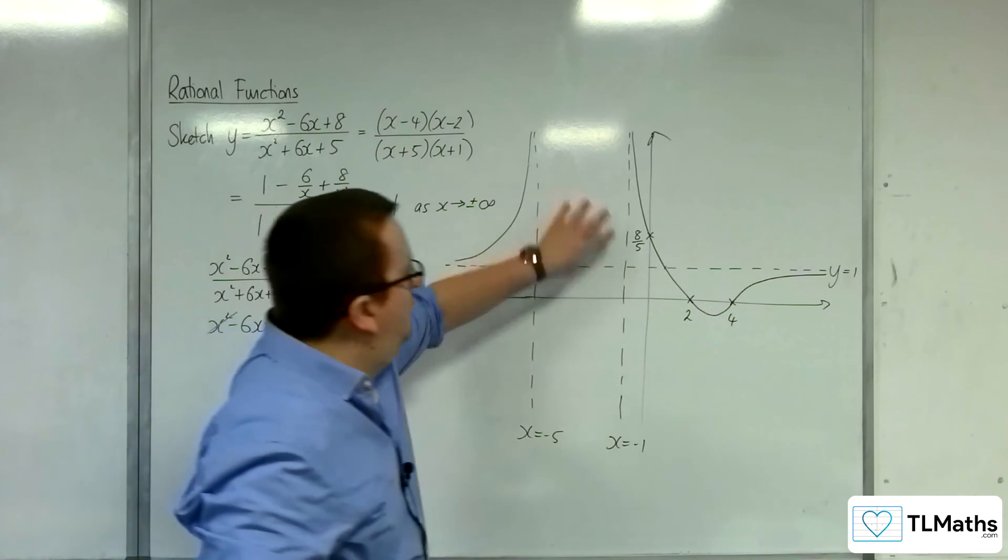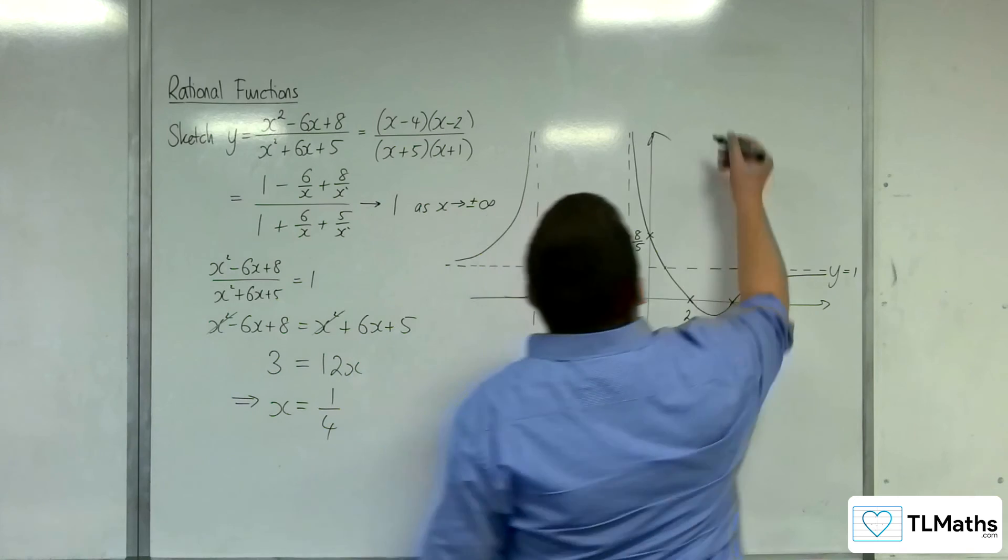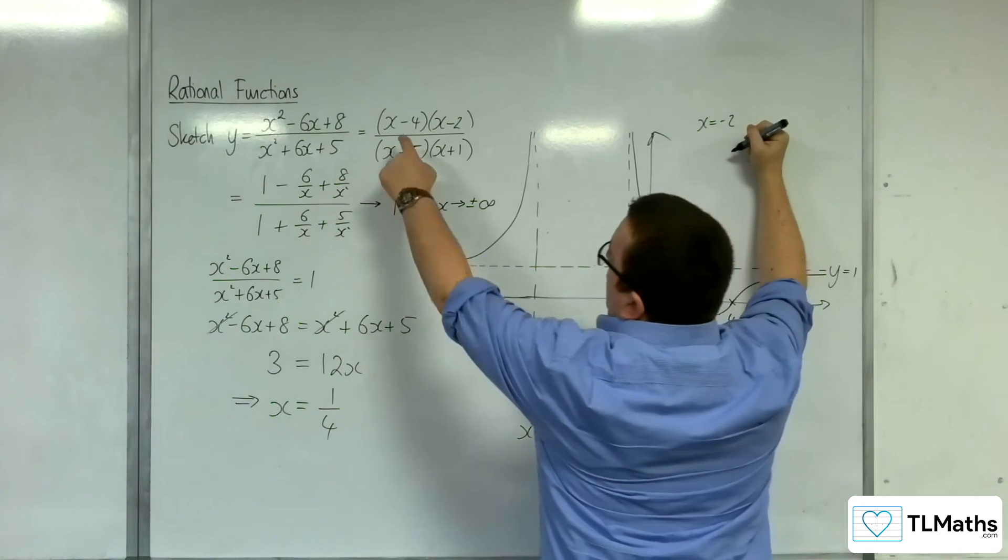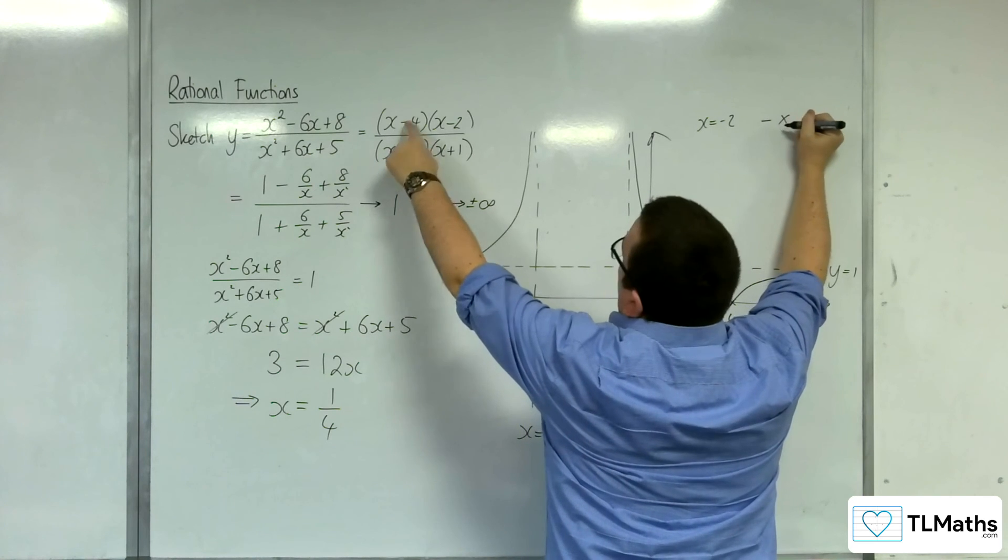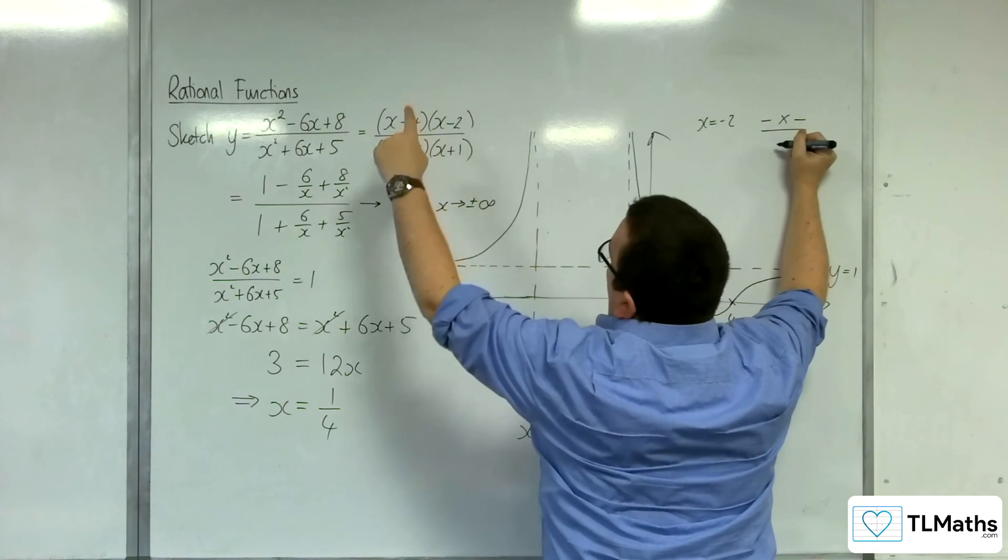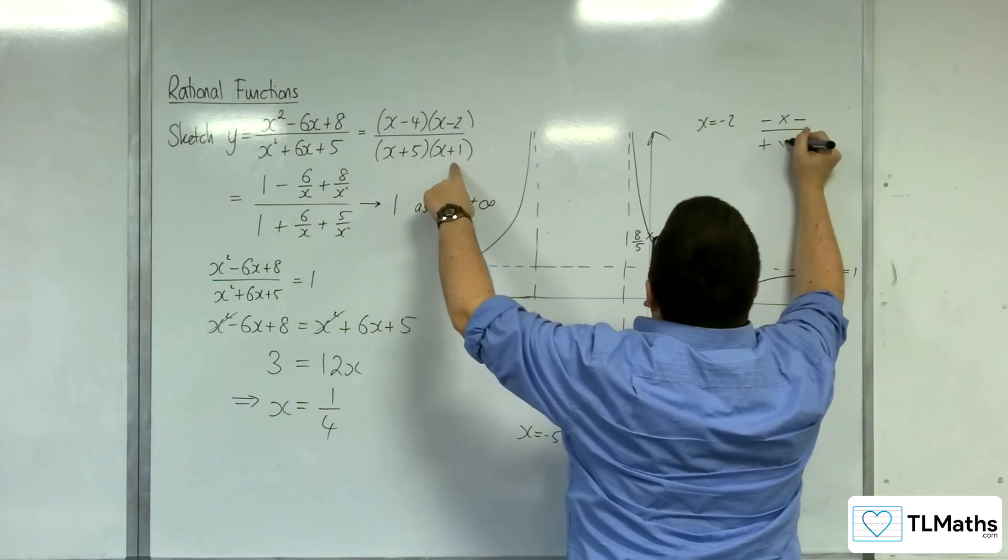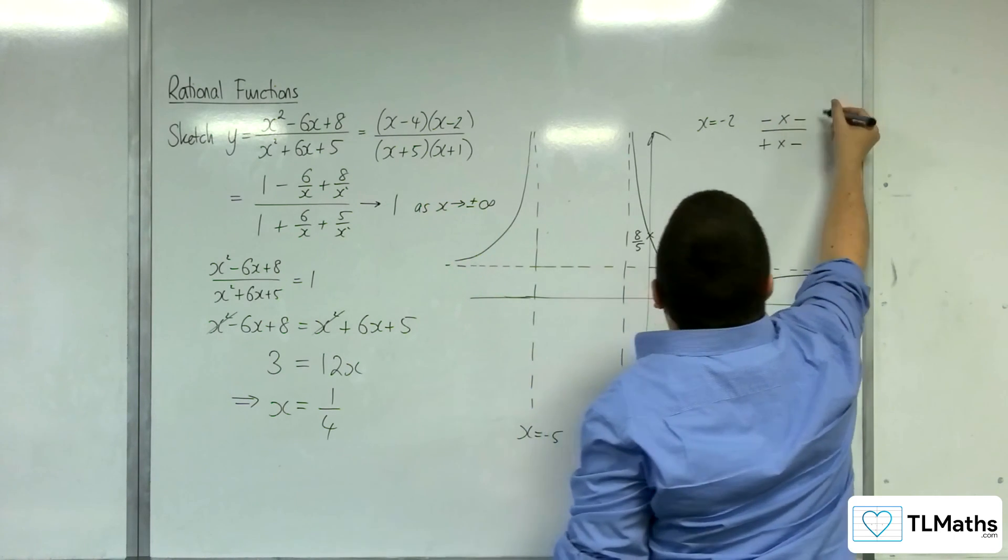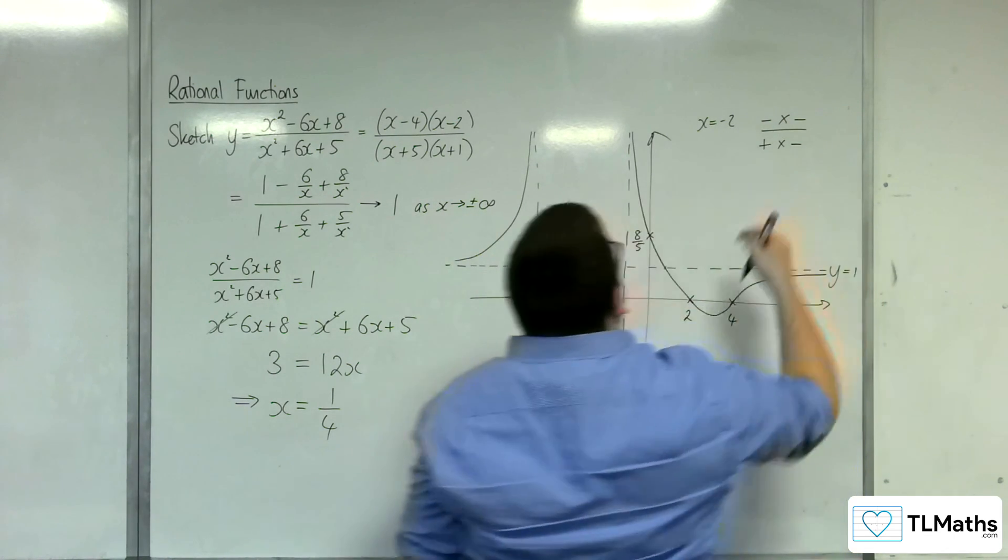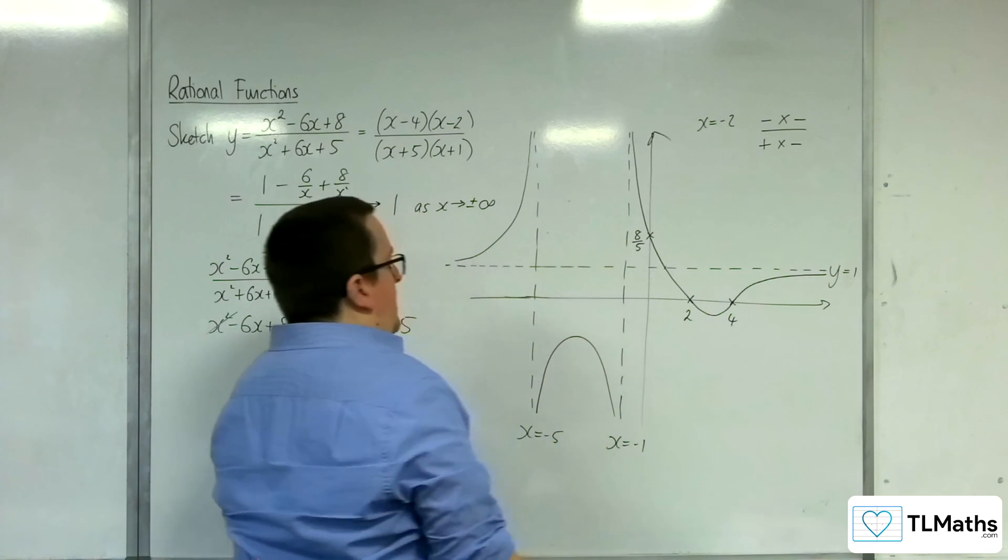But I don't know whether it's above or below, so I'm going to try a value out. We're going to try x equals minus 2. So when x equals minus 2, I'm going to pop it into this one. So we've got minus 2 take away 4 is negative, minus 2 take away 2 is negative. We've got minus 2 plus 5 is positive, and minus 2 plus 1 is negative. So we've got a positive divided by a negative, and so negative. And so it's definitely down here for that part of the graph.